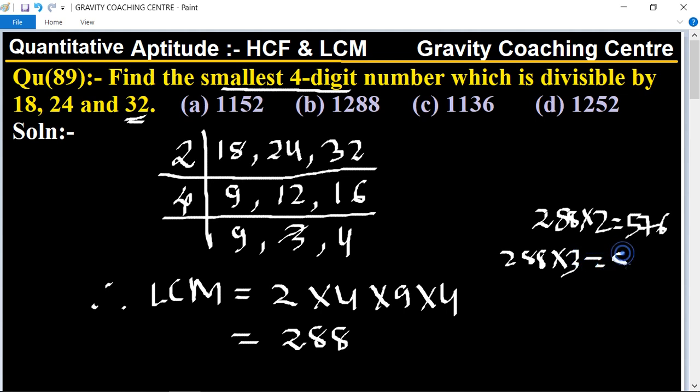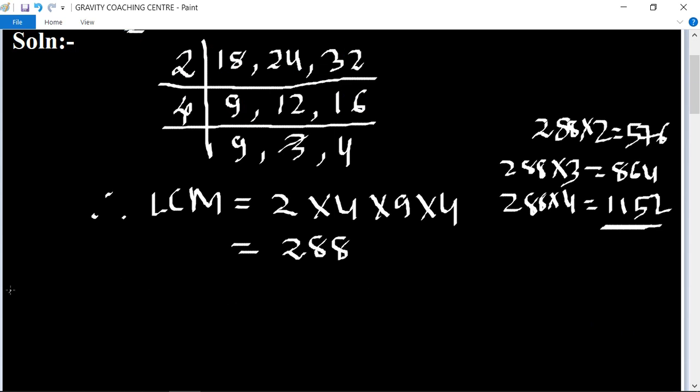Now again multiply by 4, and its product is 1152, which is the four-digit smallest number. Hence, the required smallest four-digit number is 1152.